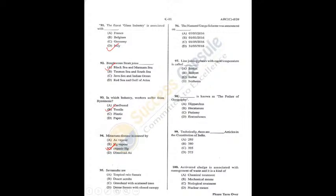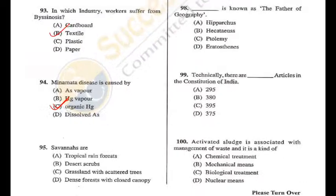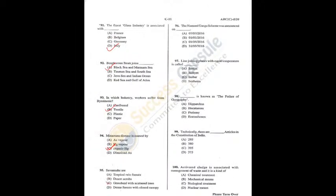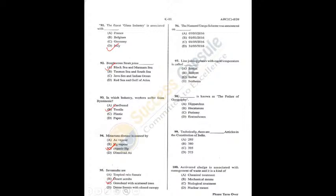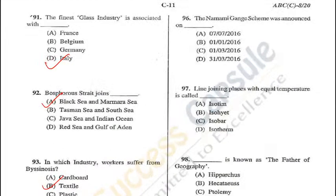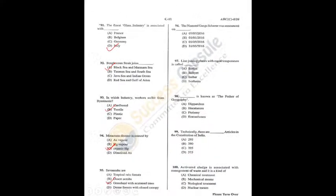Question 95: Savannas are grasslands with scattered trees, a specific characteristic of Africa — C is the correct answer. For Q96, the answer is A.